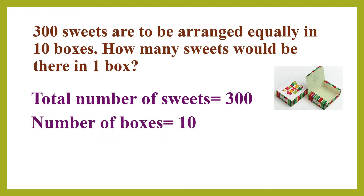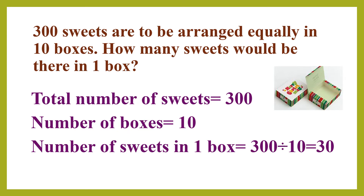Number of boxes is equal to 10 — that is also given in the question. So what we have to find is the number of sweets in one box. We have to divide 300 by 10. Remember division by numbers ending in 0, which we already learned in the previous video. Thus your answer will be 30 — in one box there will be 30 sweets.